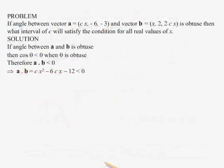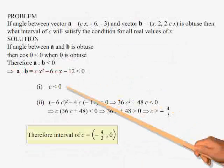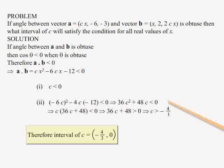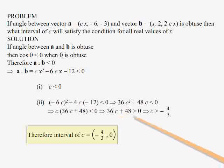Coming back to the original problem, the condition for this expression to be negative for all real values of x is: number 1, c is less than 0; number 2, 36c squared plus 48c is less than 0. This implies c times (36c plus 48) is less than 0, which implies 36c plus 48 is greater than 0, giving c greater than minus 4 over 3. Therefore, the interval of c is (minus 4 over 3, 0).